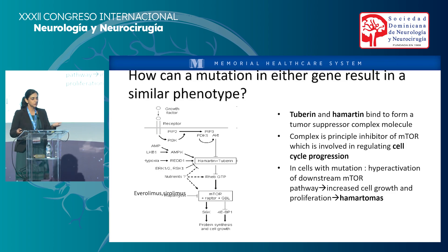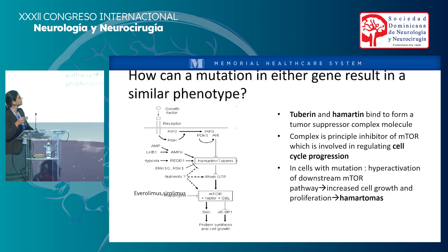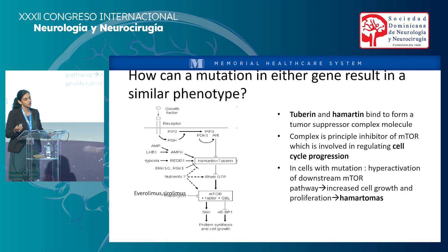So tuberin and hemerton bind to form a tumor suppressive complex molecule. The complex is a principal inhibitor of the mTOR, which is involved in regulatory cell cycle progression. If you're having a dysfunction in the hemerton, that's the dysregulation — it's not allowing tumor suppression. So you're having an increase in protein synthesis, cell growth, and all the hemerotomas from this. I'll come back to this at a later slide when I talk about management.